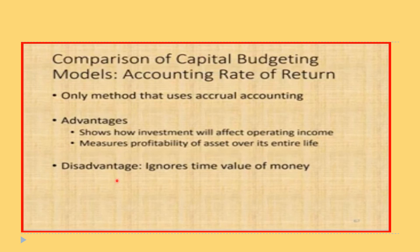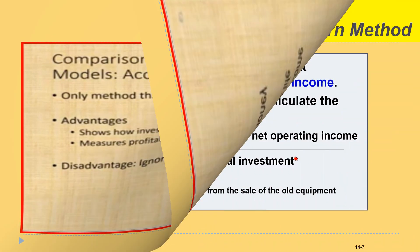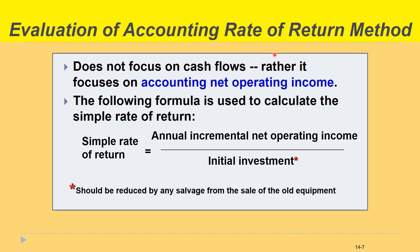The disadvantage of the ARR method is that it ignores the time value of money. The ARR does not focus on cash flows; rather it focuses on accounting net operating income. The formula used to calculate the simple rate of return is: incremental annual net operating income divided by the initial investment, reduced by any salvage value from the sale of old equipment.